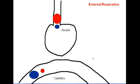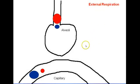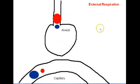In this screencast I'm going to review the processes of external and internal respiration. We're going to start with external respiration, which involves the processes between the alveoli and the capillaries. The alveoli have a very thin membrane and capillaries have a very thin membrane, so diffusion is going to occur between these two structures.